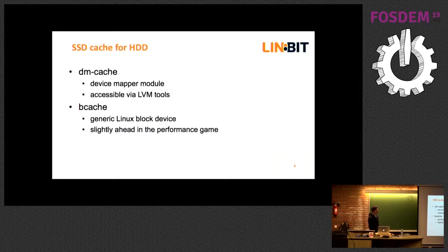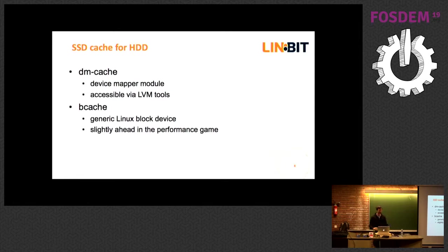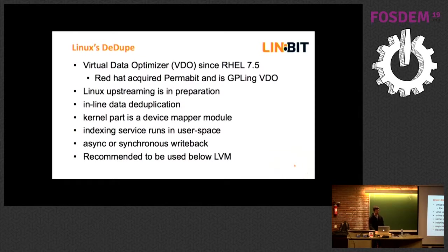There's also a caching layer — DM cache, Bcache — a newer feature. It's another layer of virtual block devices, essentially a filter that gives you SSD caching for your hard disk drives in a tiered setup. Your slower hard drives hold all your data, while the SSD cache caches frequently accessed data for faster access. Deduplication is another newer layer, originally a commercial project that was open-sourced under GPL by Red Hat. It's another layer you can combine with the others to build your storage architecture — and that's what we make use of in LinStor.